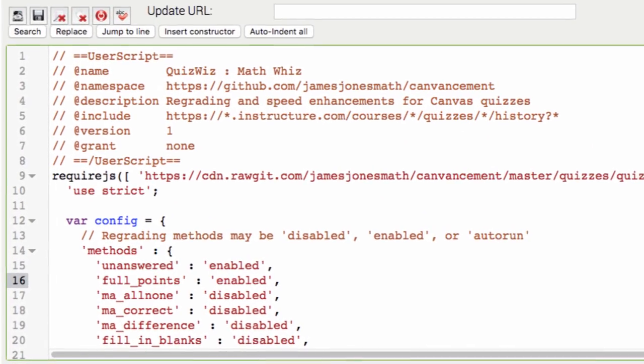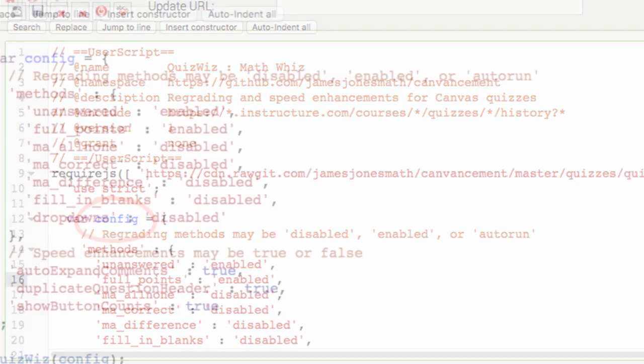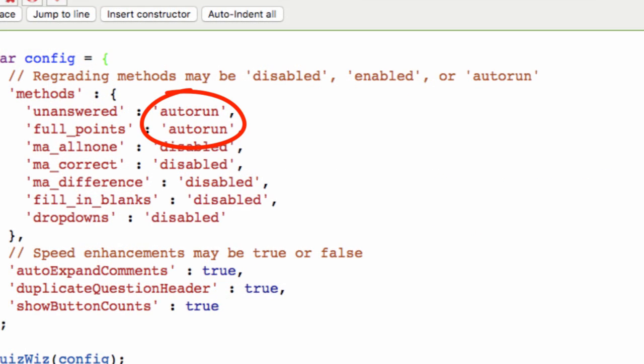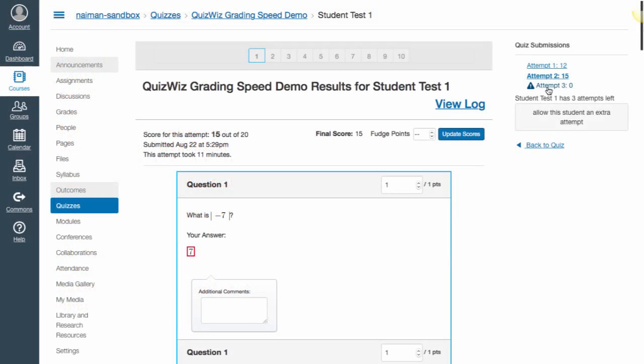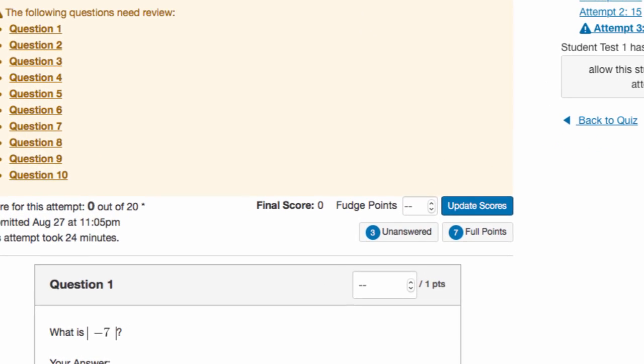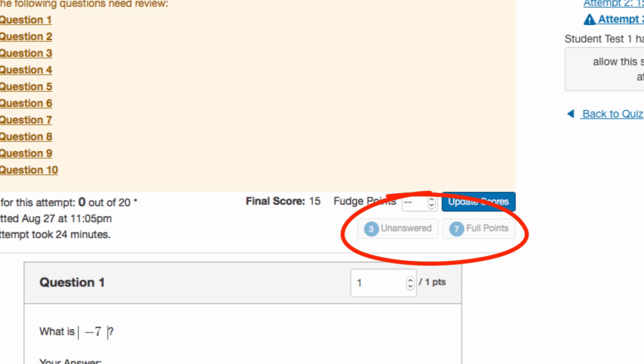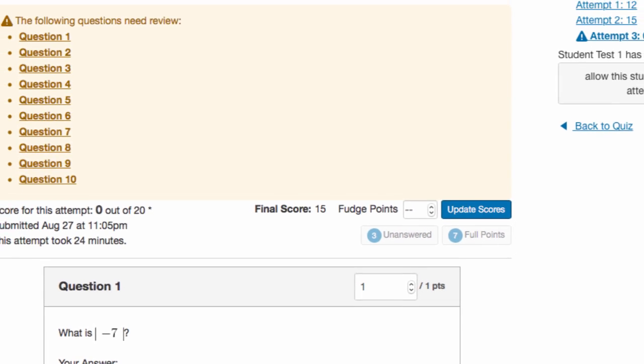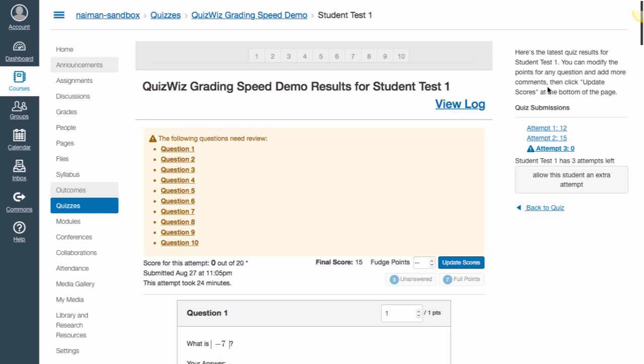QuizWiz can also be configured to perform its tasks automatically upon entry into a student's quiz answers, assigning zeros to all unanswered questions and full points to all attempted answers, without the need to click QuizWiz's buttons.